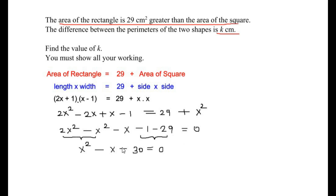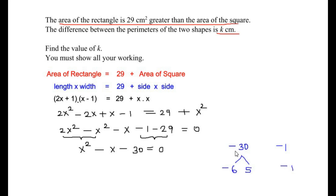Now let us factorize and find the values of x. There are various methods such as splitting the middle term or using the quadratic formula. Here I am going to use splitting the middle term by finding the sum and product of the roots. We need factors of negative 30 that add to negative 1. Those factors are negative 6 and positive 5. So we write x² minus 6x plus 5x minus 30 equals 0.